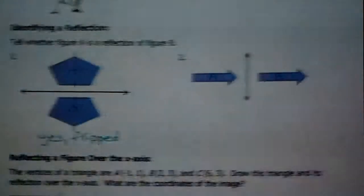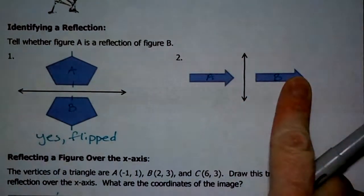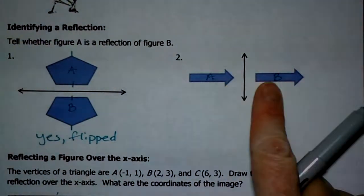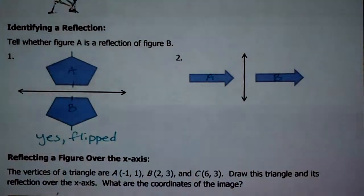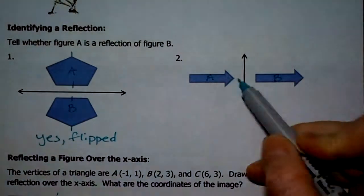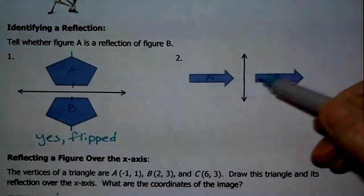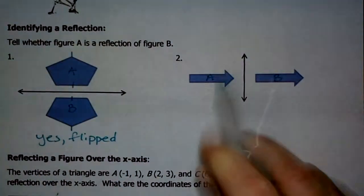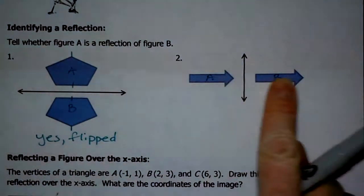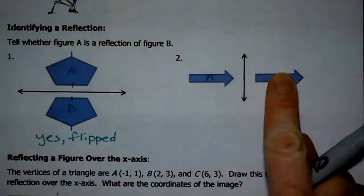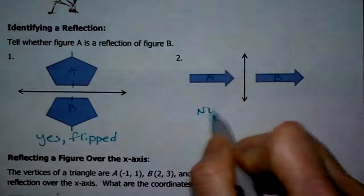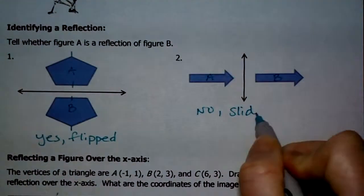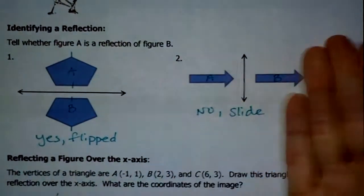Okay, now look at number two. Here's A, here's B. Does it look like A is looking in a mirror? No, because if A were looking in the mirror, this arrow head here would be right here. This is actually a translation, it's a slide. So this would be a no. It's just a slide, it's not flipped right over.